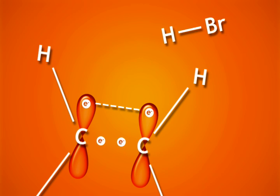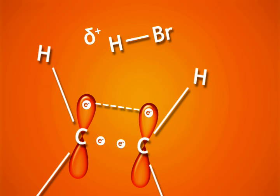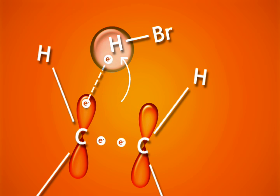These pi electrons are thus attracted to the partially positive hydrogen atom in the halide molecule and are able to form a stronger sigma bond.